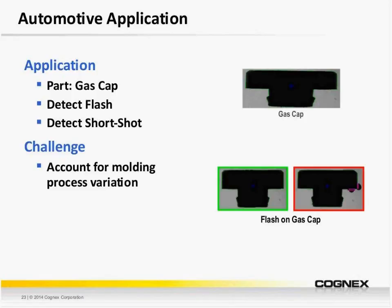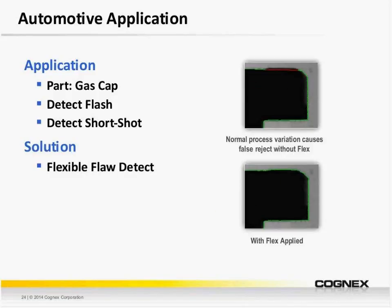The next example is from the automotive industry where we have an injection-molded gas cap. The goal is to detect flash and short shot. We do this by taking a silhouette of the gas cap and inspecting around the edges. In the bottom images, on the left we have a good part, and on the right we've properly detected the flash along the right side of the cap. The challenge with this part, like most plastics, is the natural process variation due to temperature and humidity levels. Traditionally, we might solve this by applying several histogram tools along the edge to detect excess or insufficient material — but this is cumbersome and requires manually accounting for process variation.